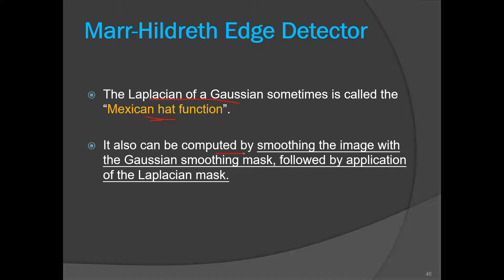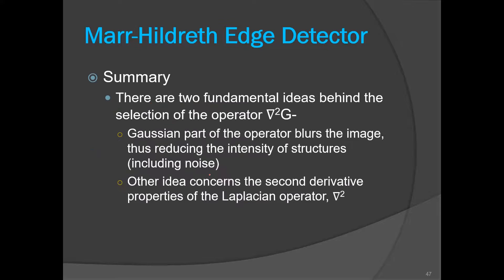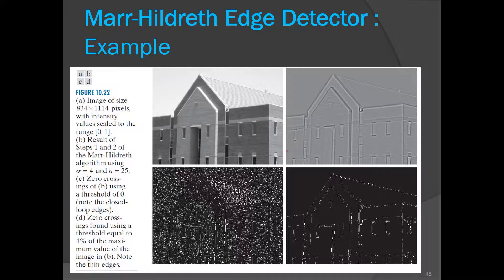The LoG can also be computed in two steps: first smooth the image using the Gaussian low-pass filter, then apply the Laplacian mask. To summarize, there are two fundamental ideas behind selecting this operator. First, since the Laplacian is sensitive to noise, we apply the Gaussian low-pass filter first to reduce noise. Then we apply the Laplacian to utilize its zero-crossing property. That is the main idea behind the LoG operator.